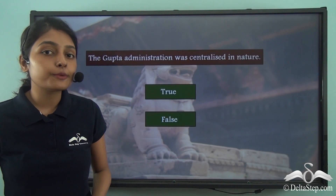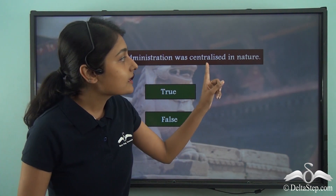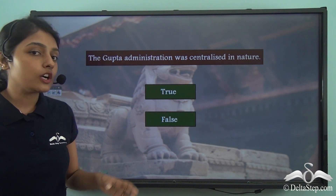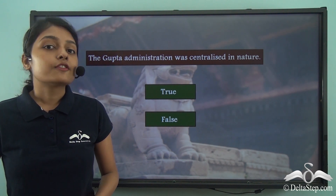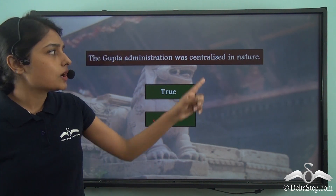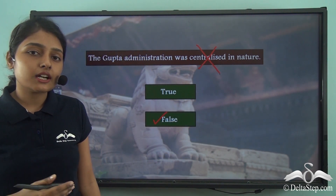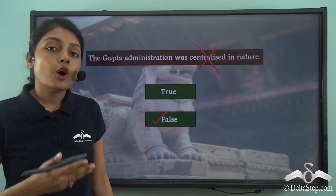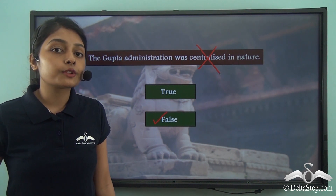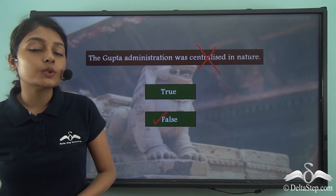The Gupta administration was centralized in nature — is this statement true or false? The correct answer is: this statement is false. The Gupta administration was not centralized in nature; it was decentralized in nature. We just saw how the power structure was divided into several categories for the purpose of better administration and better implementation of different rules and policies.